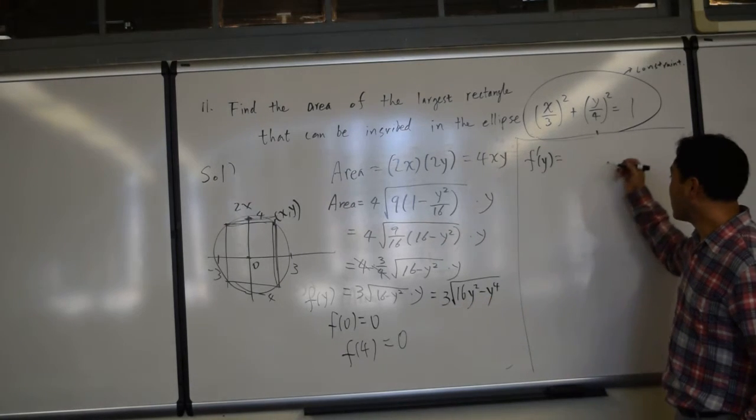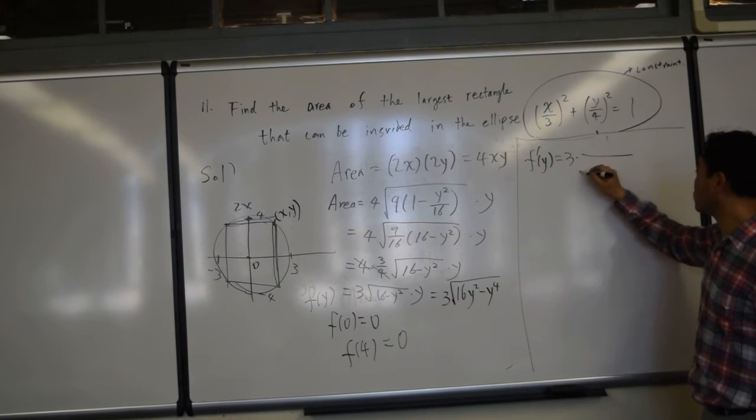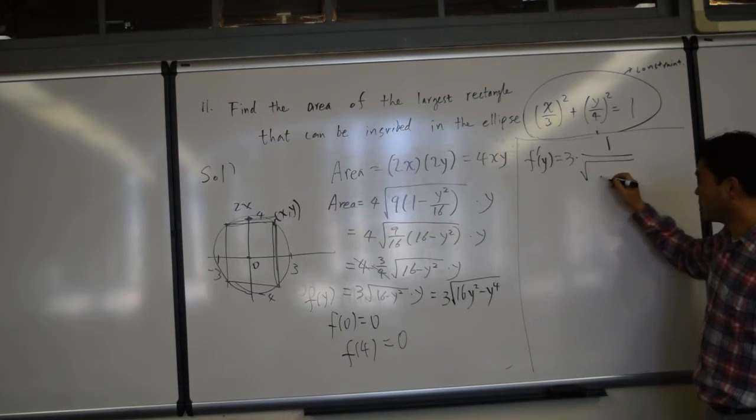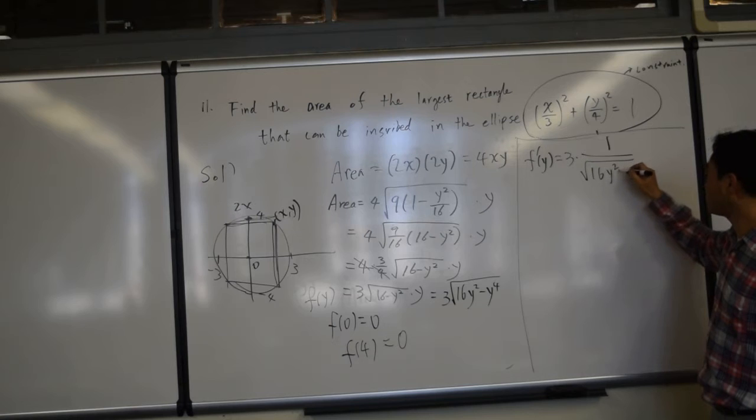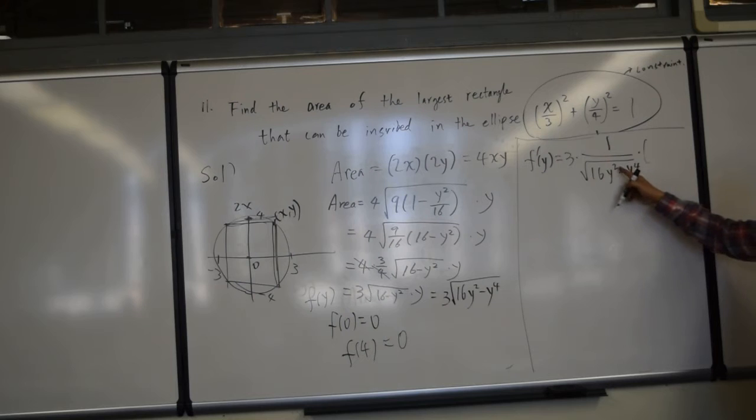Alright, so first of all, we know that if you differentiate square root, it's 1 over 2 times square root of whatever that is, times the derivative of the inside function, which is 2 comes down to 32y minus 4y cubed.